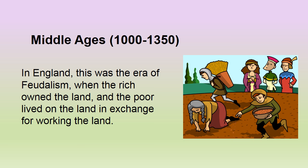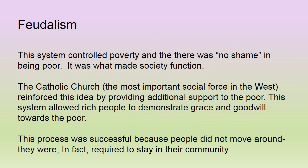We're going to start off in the Middle Ages, specifically looking at the years 1000 to 1350. We're not starting in the United States, because at this point the United States was still primarily populated by the Native Americans. So we're going to start in England, and this was the era of feudalism, when the rich owned the land and the poor lived on the land in exchange for working the land.